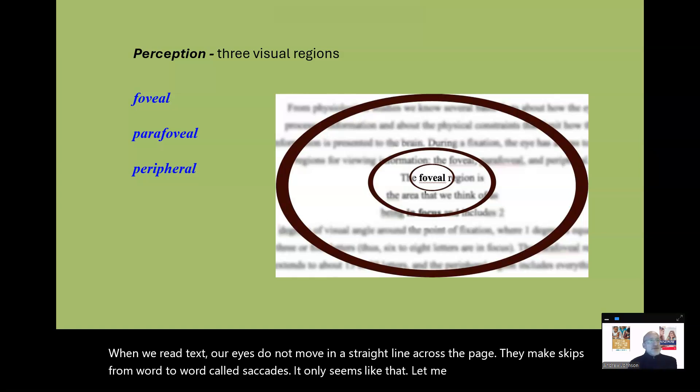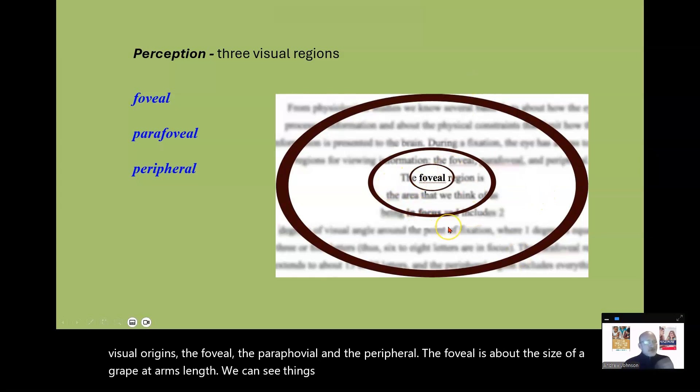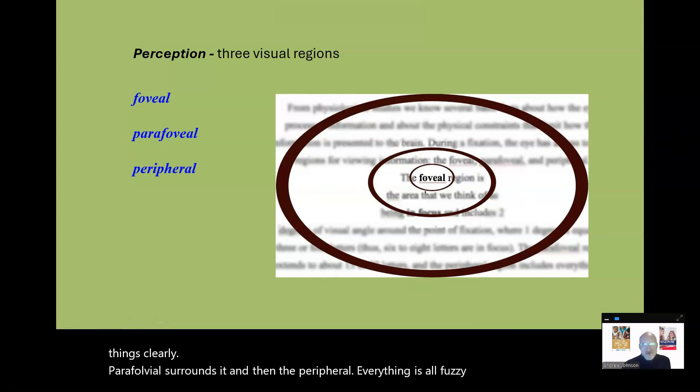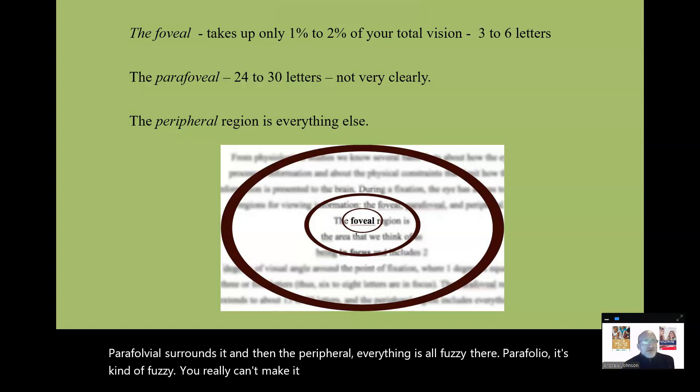We have three visual regions: the foveal, the parafoveal, and the peripheral. The foveal is about the size of a grape at arm's length. We can see things clearly there. That's the only region we can see things clearly. Parafoveal surrounds it, and then the peripheral, everything is all fuzzy there. Parafoveal, 24 to 30 letters, not very clearly. Foveal, 3 to 6 letters, peripheral, everything else.